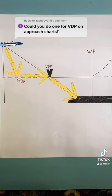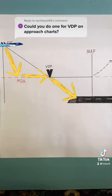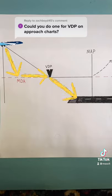The VDP might be identified by a marker beacon, cross radial, or DME reading. If you didn't have the equipment to identify it, you'd fly the approach as if it wasn't there.